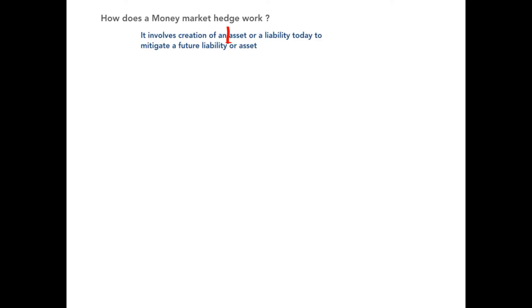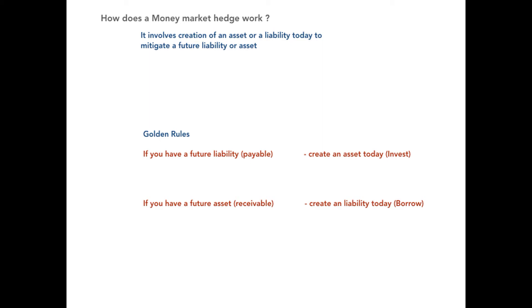So how does the money market hedge work? It involves creation of an asset or a liability today to mitigate a future liability or asset. Note carefully the sequence: creation of an asset or a liability today to mitigate a liability or an asset in the future. This means if you have a future liability — that is, a future payable in foreign exchange — then you need to create an asset today in the foreign exchange. And on the other hand, if you have a future asset — a future receivable in foreign exchange — then you need to create a liability today in the foreign exchange. Now let's understand this with the help of an example.